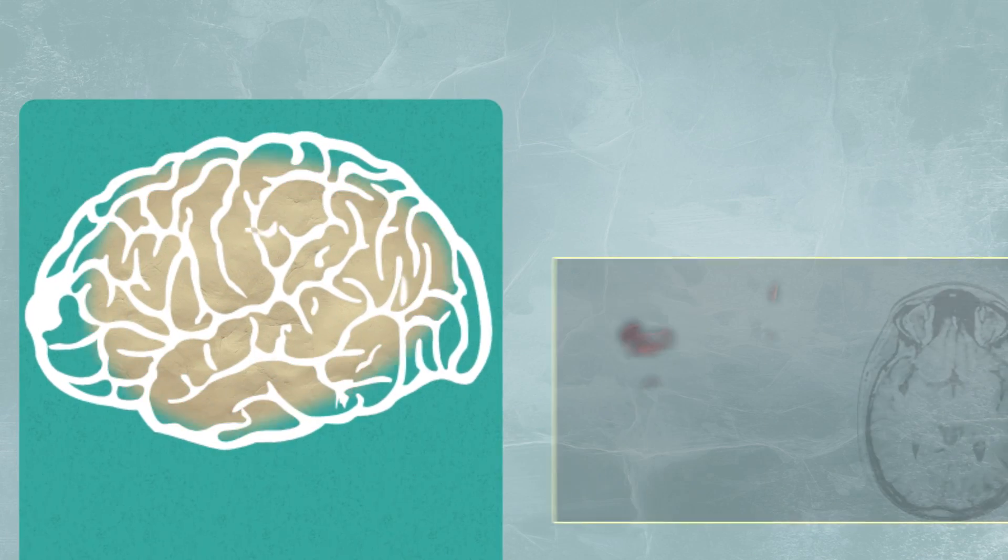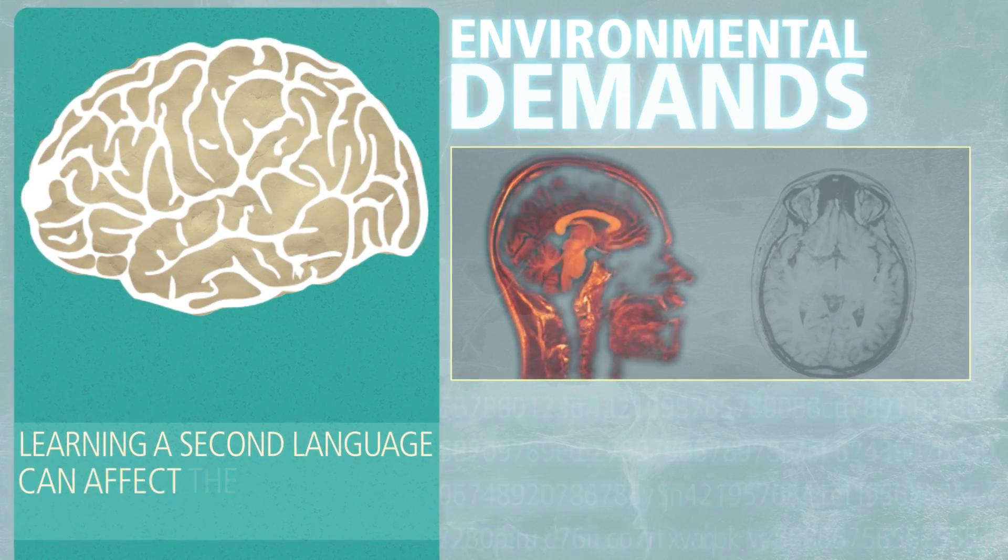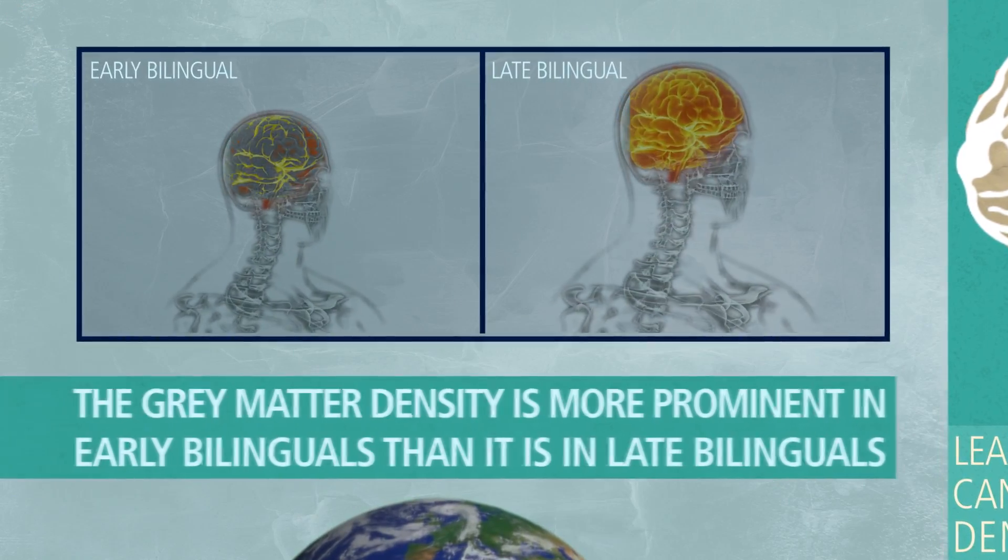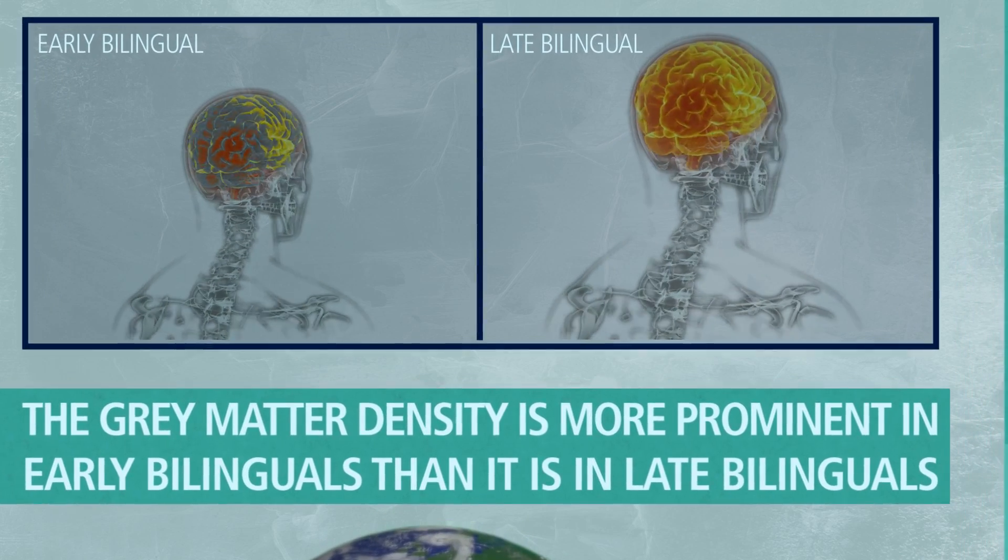Now, our brains change structurally over time due to environmental demands. For example, learning a second language can greatly affect the gray matter within the brain. And interestingly enough, the gray matter density is more prominent in early bilinguals than it is in late bilinguals.